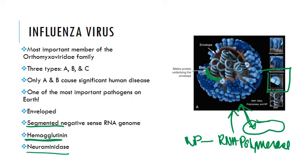Hemagglutinin has a couple of different functions. It has a spiked trimer shape, and it uses that to carry out three different functions. Each unit is activated by a protease that cleaves two subunits held together by a disulfide bond, and when it does that, it can mediate its three functions. The first is that it acts as the viral attachment protein — that's how it attaches to the host cell.